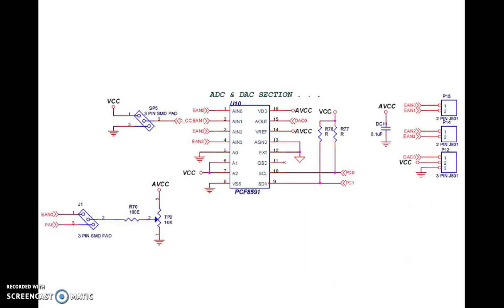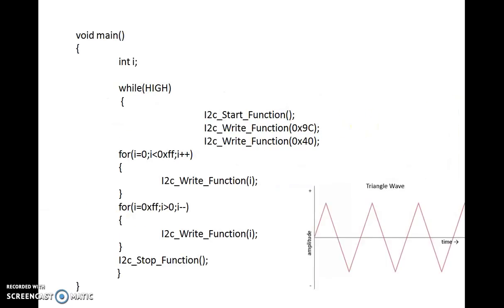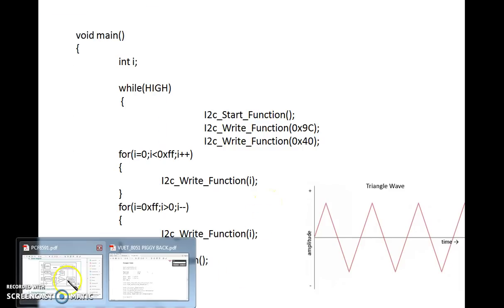These are the basics of the ADC and DAC section. Coming to the program for DAC, we are going to convert digital to analog — it is a very simple program. We can generate our own digital data and feed that digital data into this chip through the SDA line. The chip will convert it to analog, available on that line which we can connect to a CRO and see the signal. Before seeing that program, let us see the operation of the chip.